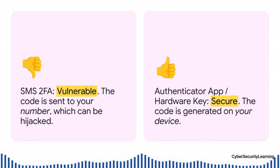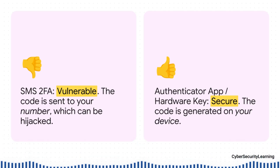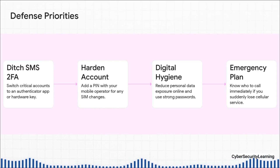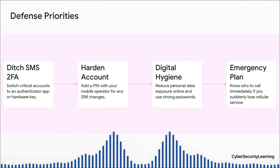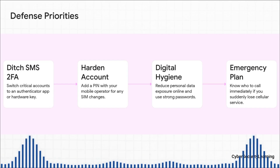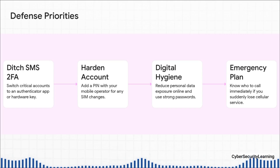The gold standard is a physical security key like a YubiKey — you literally have to have the key plugged in and touch it. There's no way to phish that or talk your way around it. Your four-priority action plan: number one, go through your important accounts — email, bank — and switch off SMS 2FA, moving to an authenticator app. Number two, lock down your account with your mobile provider. Three, be smarter online. And four, you need an emergency plan — a fire drill for what to do if you ever see that dreaded 'no service' message.